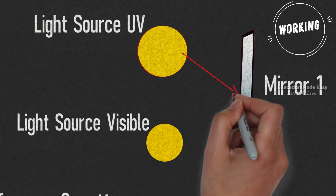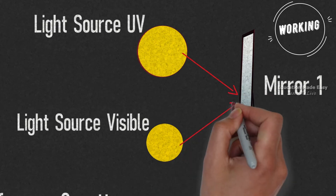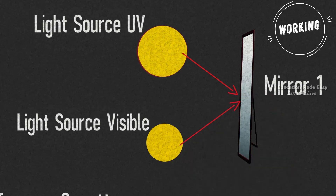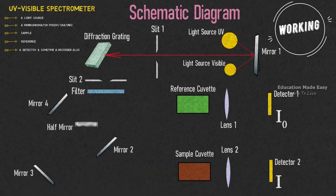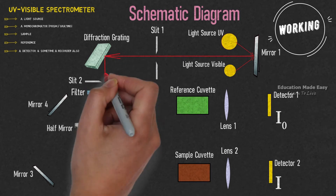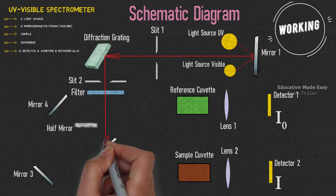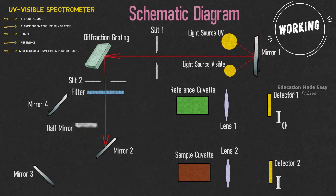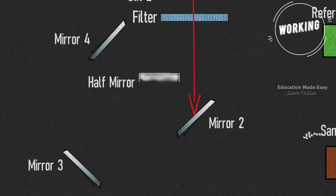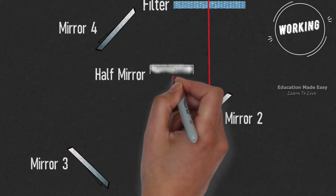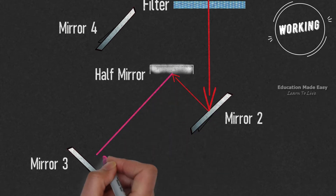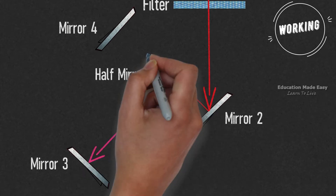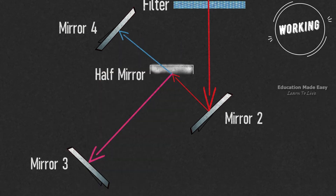The light beams from light source UV and light source visible hit mirror 1. Mirror 1 reflects the light beam and passes it to the diffraction grating through slit 1. The diffraction grating reflects the light to mirror 2 through slit 2 and the filter. At mirror 2 the light is again reflected to the half mirror. At the half mirror, a part of the light is reflected to mirror 3 and the remaining is refracted to mirror 4.